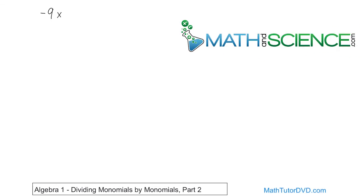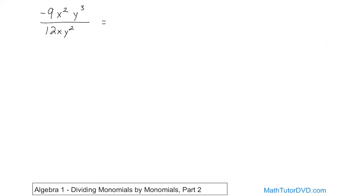Here we have 9x squared times y cubed, with a negative sign, and 12 times x times y squared. In order to not destroy the original problem, I'll just rewrite it: negative 9x squared y cubed divided by 12 times x times y squared. So how do we simplify this?